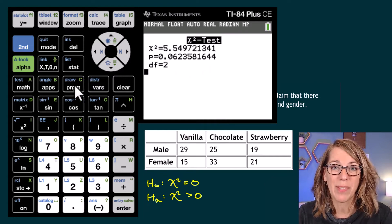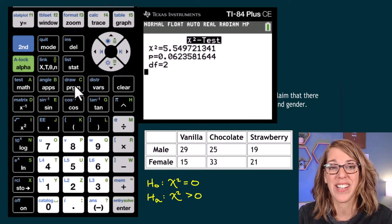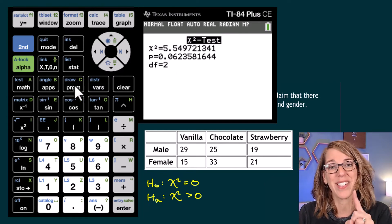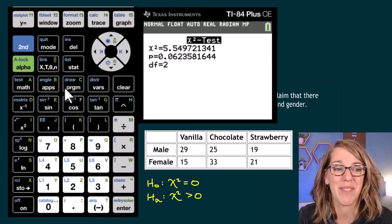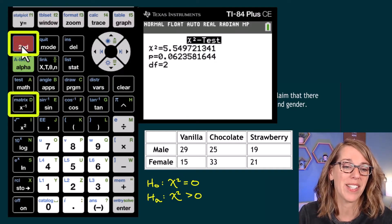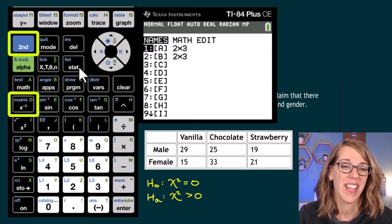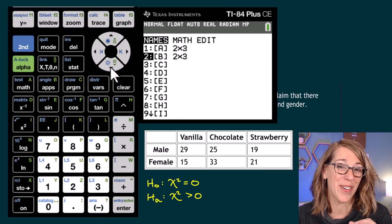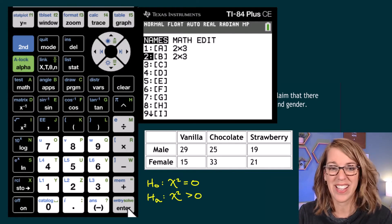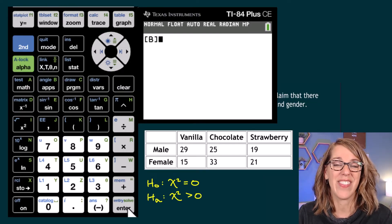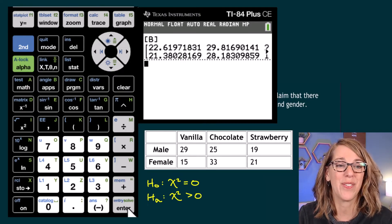And it's going to give me the expected values. I just have to go find them. Remember, it put my expected values in matrix B. So I'm going to go back to my matrix menu. And notice how matrix B is now also a 2 by 3. I hit enter. And then enter again to view that.